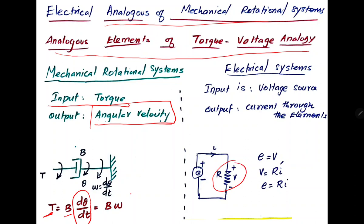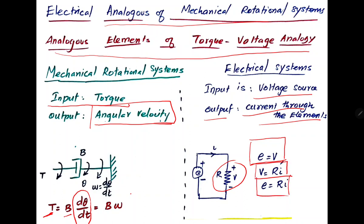So this dashpot is equivalent to a resistor. In the electrical circuit, the input is a voltage source and the output is current through the resistor. The input voltage E equals the voltage across the resistor, so V = R times I, and E = R times I. This is the equivalent circuit of the mechanical rotation system dashpot.